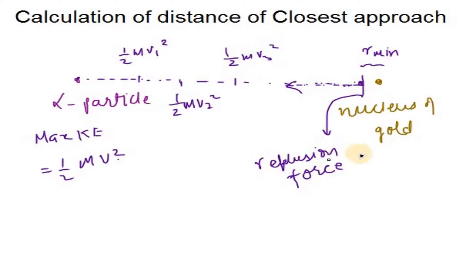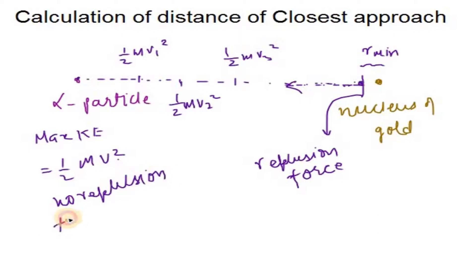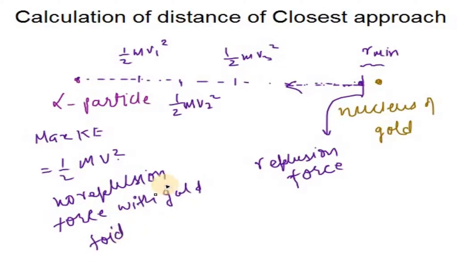The alpha particle experiences repulsion forces from the nucleus. Initially, at a very large distance, there is no repulsion force with the gold foil, so it does not have any repulsion force initially.